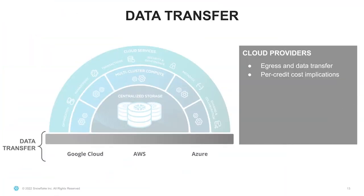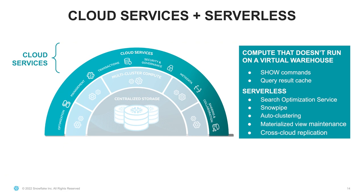There are also data transfer fees if you have workloads running in different clouds — egress or data transfer costs. Look at workloads that might be combined within an individual cloud or region. One of the more interesting metering areas is cloud services and serverless features, where there's percentage billing and per-use billing for different components. We want to understand when search optimization makes sense, how to optimize Snowpipe, auto clustering, whether tables need clustering via order by on insert, and materialized view maintenance for data changes over time.